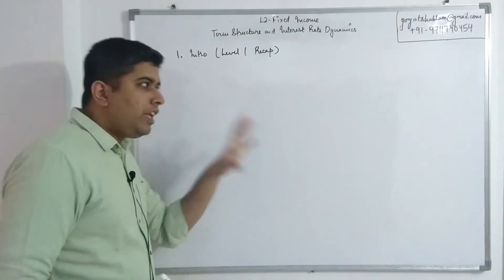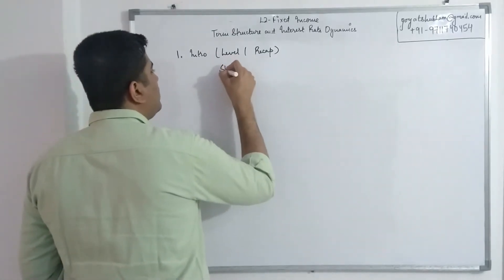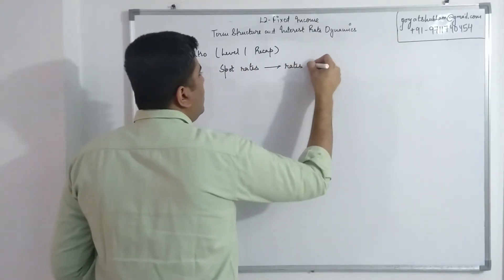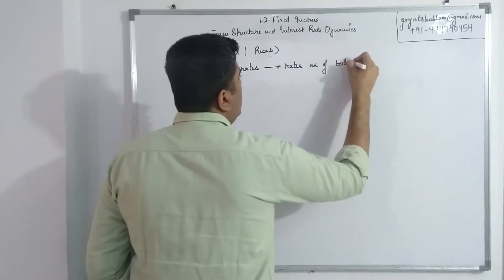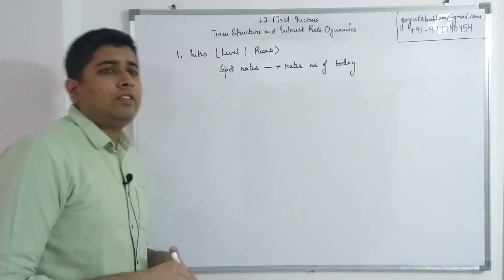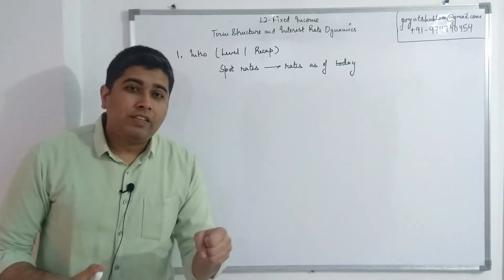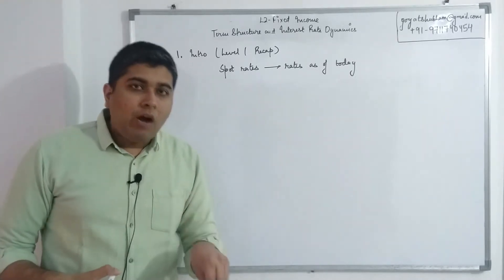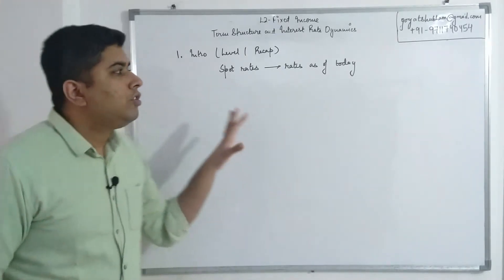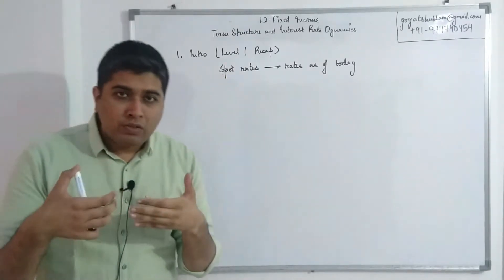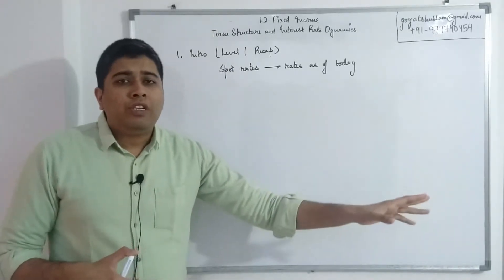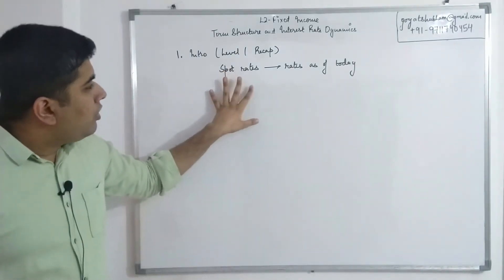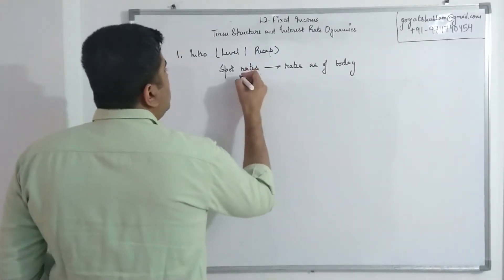The first topic that we have to recap from level one is spot rates. So whatever investment opportunities you have available right now, the interest rates on those are known as spot rates. So effectively spot rate simply means it's going to start right now. It can be for one year, two years, five years, 10 years, 100 years - but it's starting right now. That is the key about spot rates. Now spot rates, in order to connect it with fixed income, these can also be thought of as...